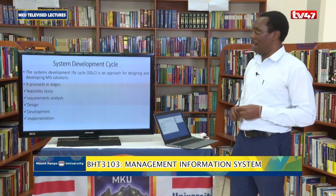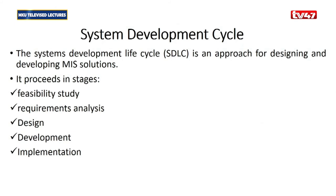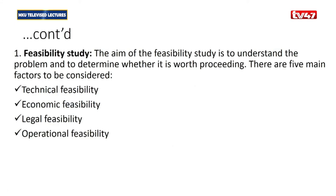Essentially it involves five phases. We have what we call: feasibility study, requirement analysis, design, development, and implementation. The first phase is the feasibility study, which involves understanding the current problem — you are providing an MIS solution and before you give the solution you want to understand the nature of the problem. Under that category we do what we call technical feasibility: do we have that kind of technology within our country, will I need technical people, and are they available? Then we have economic feasibility — the cost element — you have to look at that.